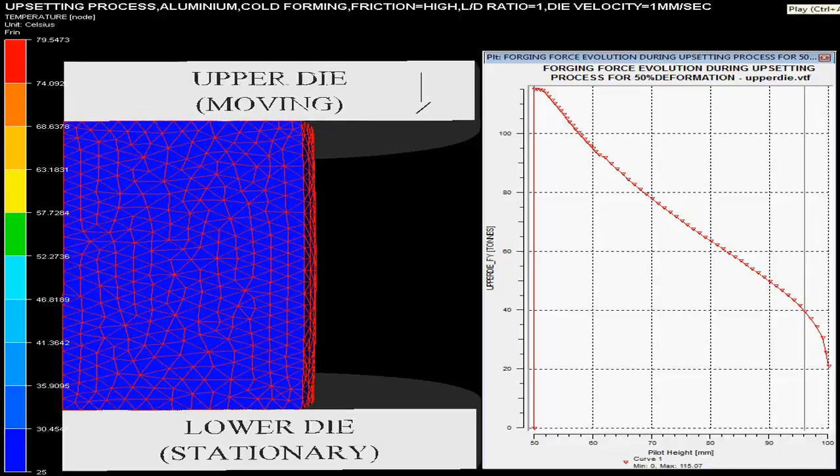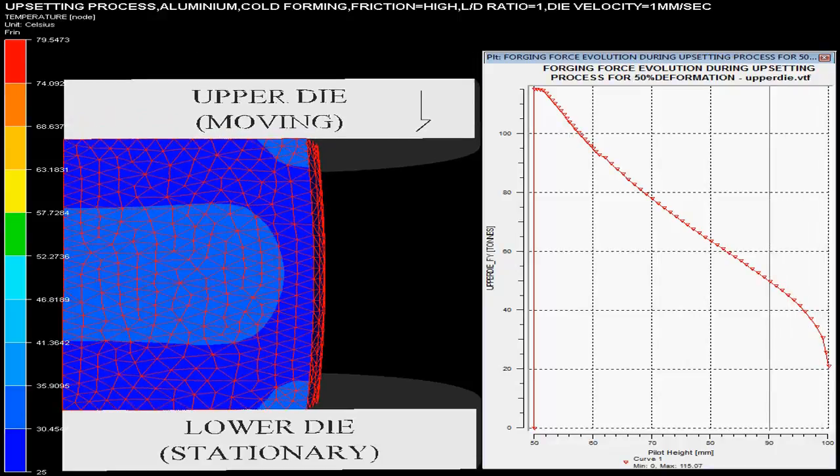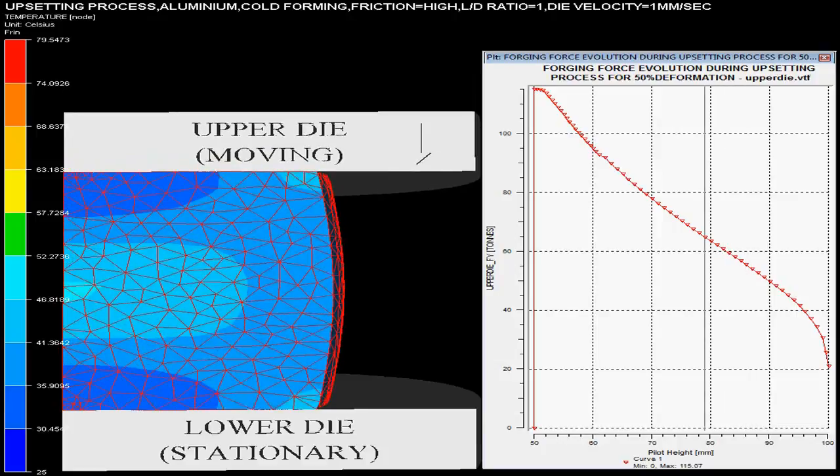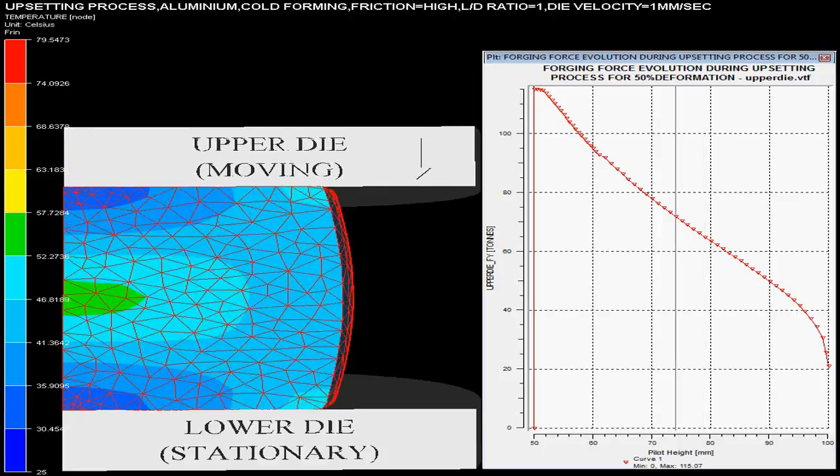The video shows the upsetting operation taking place using a mechanical press. The initial billet of aluminum having L by D ratio equal to 1 is taken cold.